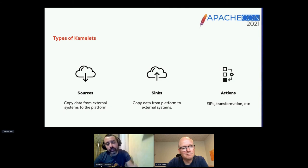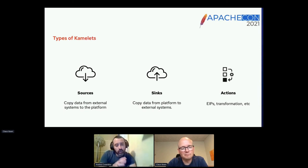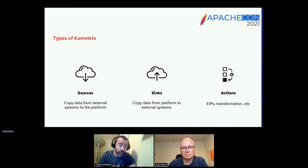What types of Camelets are we providing? First, source Camelets: if you have an external system and want to inject data into a platform like Kafka or Kinesis, you use a source Camelet. When copying data from the platform to an external system, you use a sink Camelet. In the middle, you can use an action Camelet — for example, EIP transformations or specific Kafka payload handling. You could also transform a payload into PDF format and send it to a file. All of this is possible with Camelets.